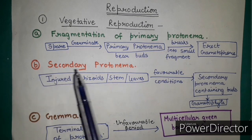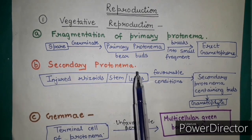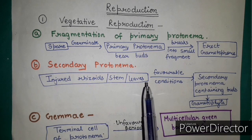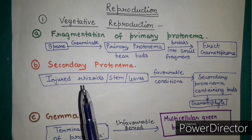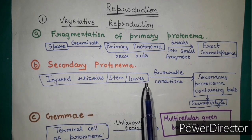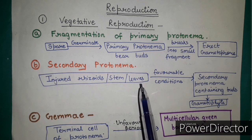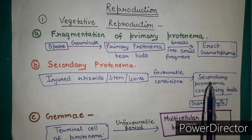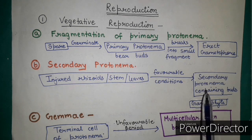The second method is by secondary protonema, which occurs in the case of injured rhizoids, stems, or leaves. Whenever there is an injury on rhizoids, stems, or leaves under favorable conditions, it will give rise to a secondary protonema that contains buds. That secondary protonema, due to accidental fragmentation, will give rise to a gametophyte.